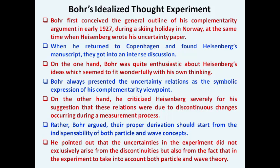Bohr conceived the outline of his complementarity argument in early 1927 while on a skiing holiday in Norway, at the same time Heisenberg started writing about uncertainty. Once Bohr returned to Copenhagen and found Heisenberg's manuscript, they had an intense discussion. Bohr was enthusiastic about Heisenberg's ideas, which seemed to fit wonderfully with his own thinking about wave-particle duality, and he always presented the uncertainty relations as a symbolic expression of his complementarity viewpoint.